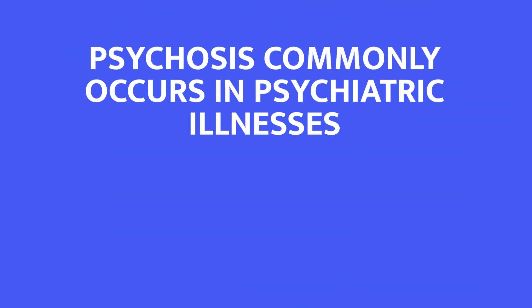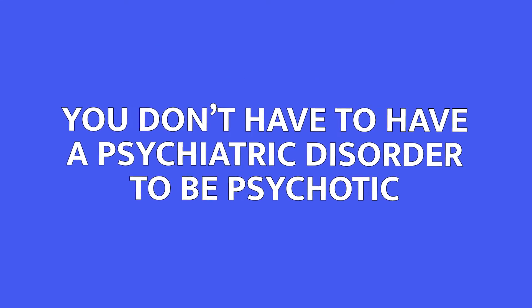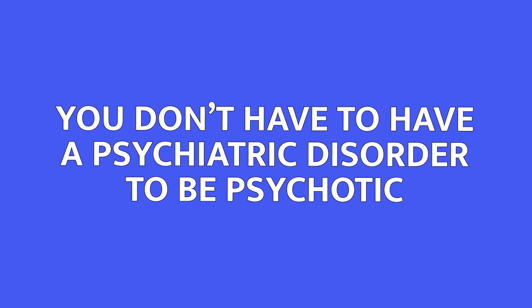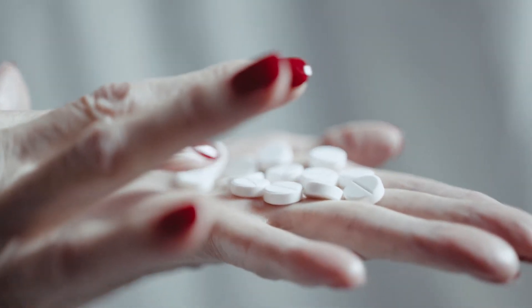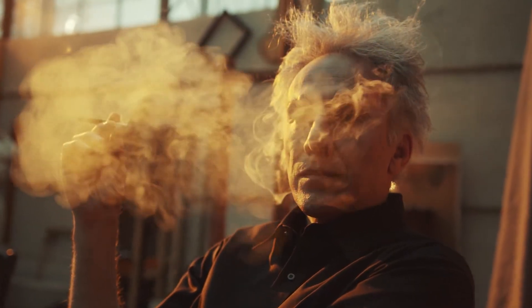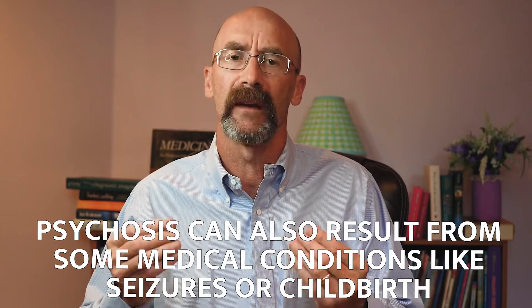Psychosis commonly occurs in psychiatric illnesses like schizophrenia, bipolar disorder, and even very severe major depression. But you don't have to have a psychiatric disorder to be psychotic. Medications are a well-known cause, including a long list, but common examples are steroids — steroid psychosis. Psychosis has also been described with HIV medications and even some common antibiotics. Other common culprits are illicit substances such as cannabis, hallucinogens like LSD, and psychosis can also result from medical problems like seizures, thyroid disease, or even after childbirth.